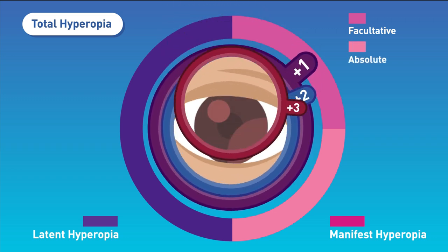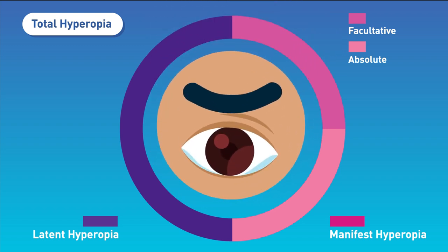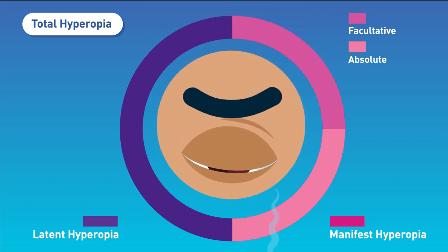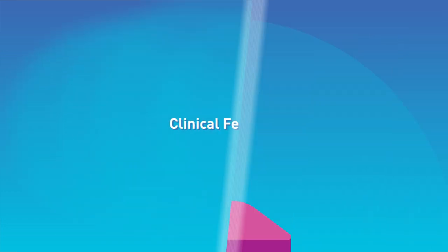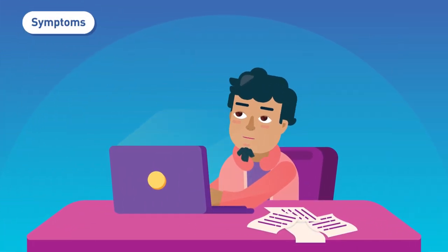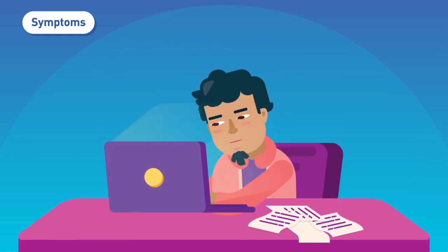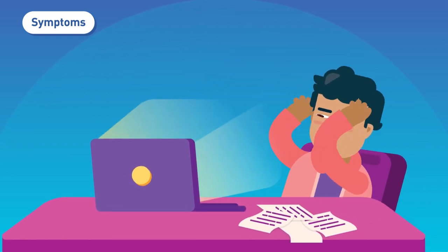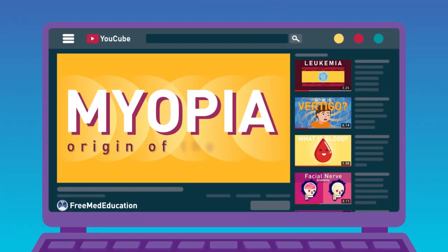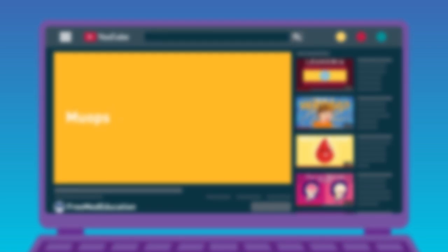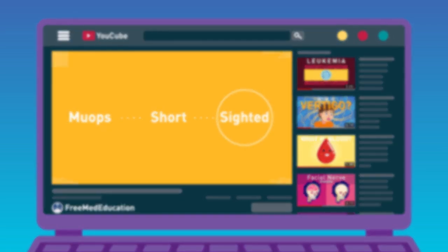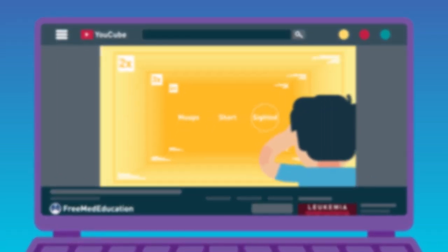Clinical Features - Symptoms: Eye straining or discomfort. Asthenopia including eye tiredness, pain, headache or mild photophobia. Blurred vision with eye straining when muscle contraction attempts but fails to correct hyperopia. Blurred vision only when refractive error is high and cannot be corrected at all by muscle contraction efforts.